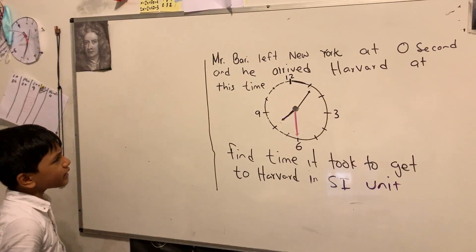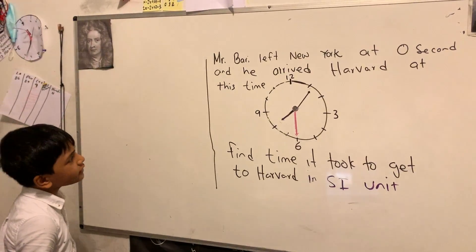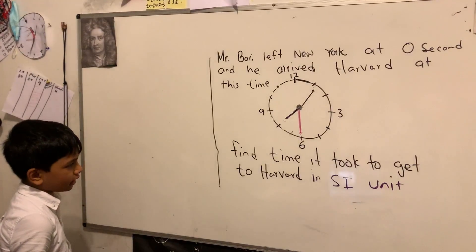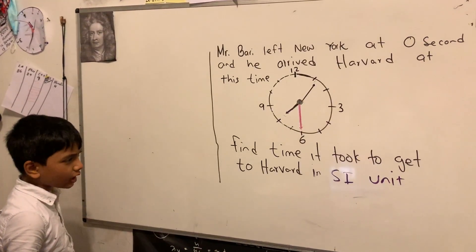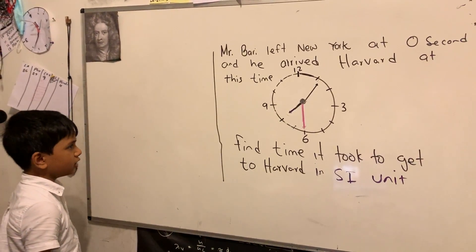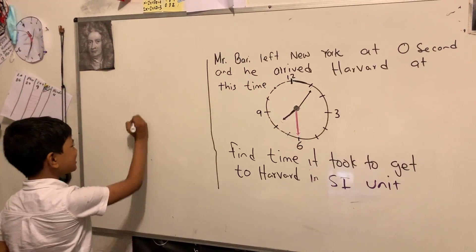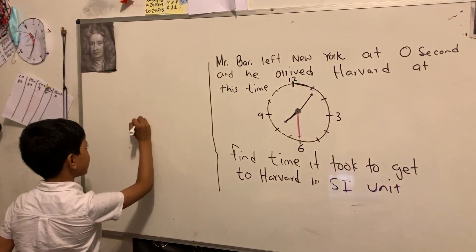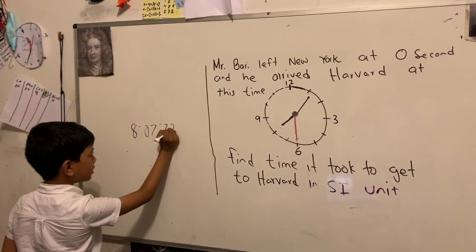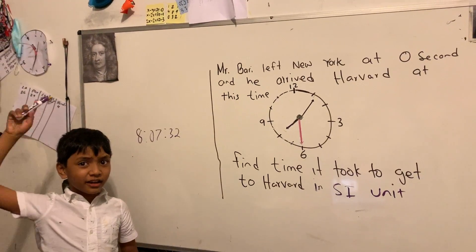Mr. Barry left New York at zero seconds and arrived at Harvard at a certain time. From the time it took to get to Harvard, express the answer in an SI unit. It looks like that's 8:07:32. But what is an SI unit?